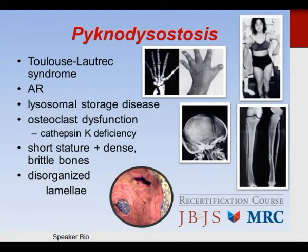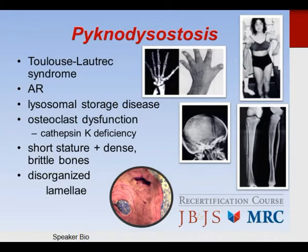Pycnodysostosis, also called Toulouse-Lautrec syndrome, is an autosomal recessive disorder and a cathepsin K deficiency — a lysosomal storage disease causing osteoclast dysfunction. These patients will have short stature and dense and brittle bones. On histology, the lamellae will be quite disorganized.